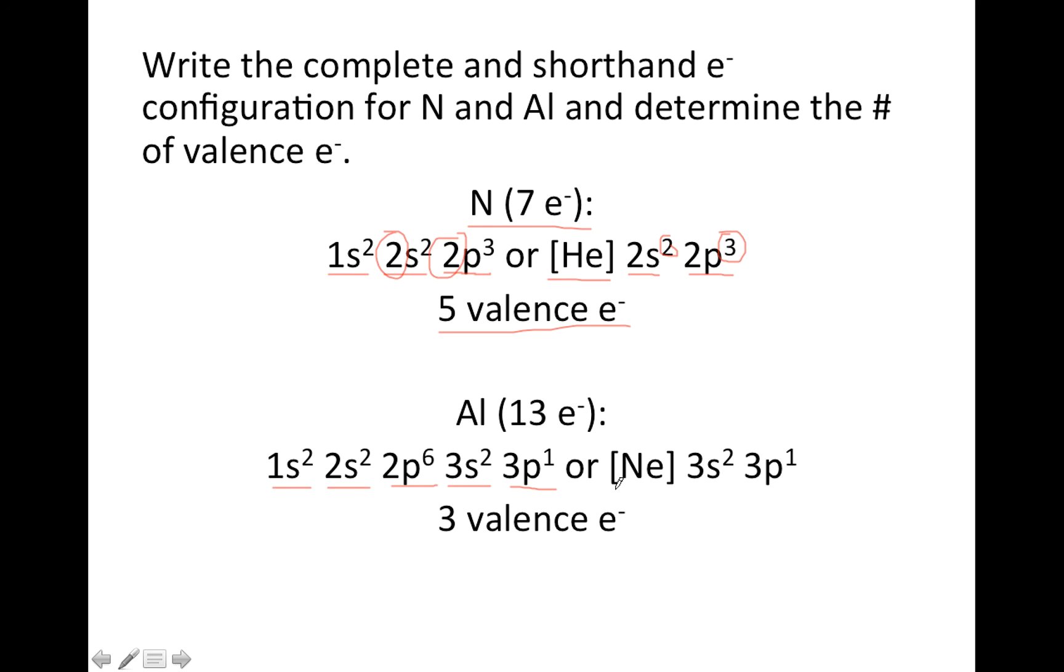If I'm doing the shorthand, I go up one row and all the way to the right, and you put neon in brackets, that's 10 electrons, so I need 3 more. Aluminum's in the third row, so I start with 3s, and I put 2 electrons there, and then my remaining electron, I put in the 3p.